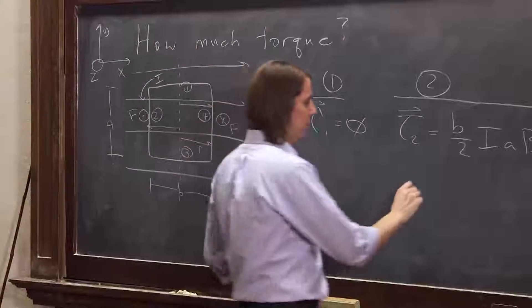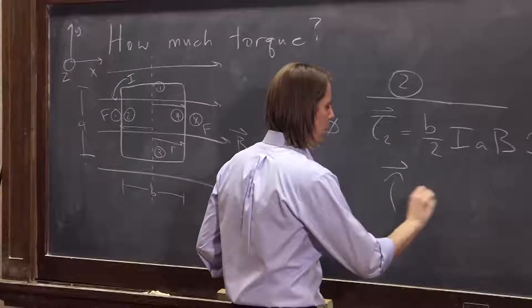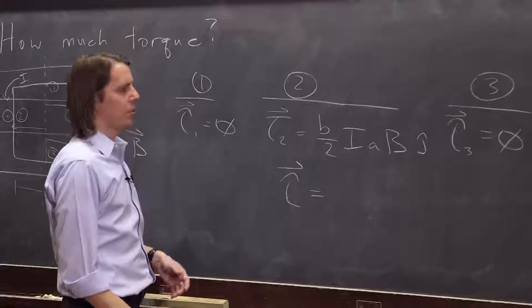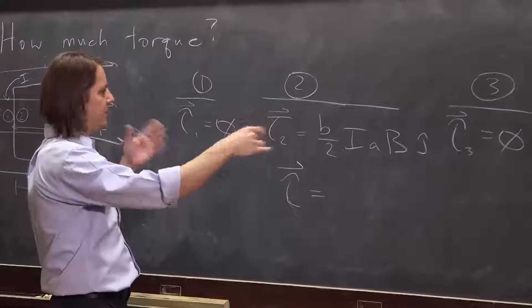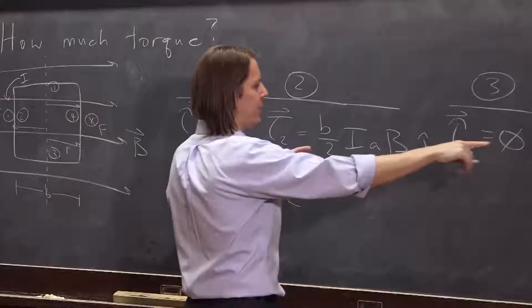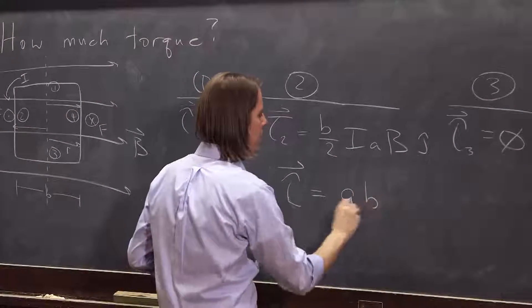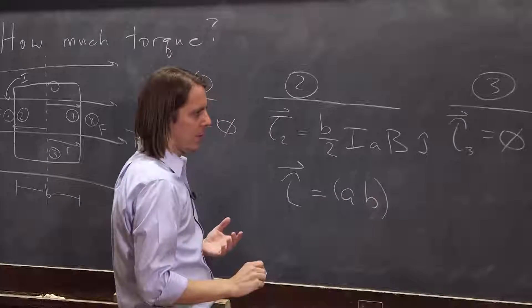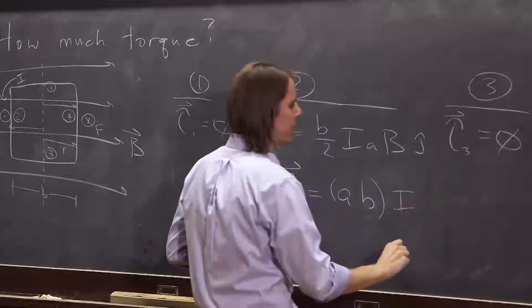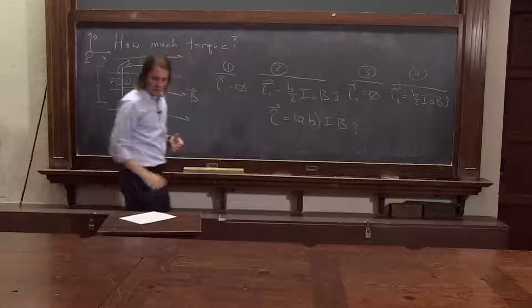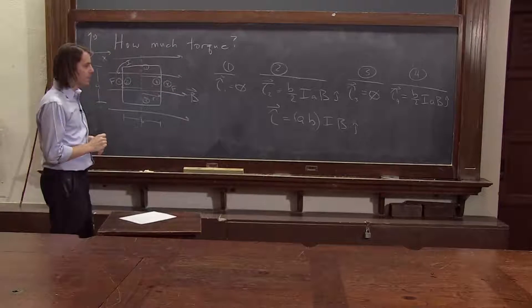So the total torque on the loop, the total torque, is the sum of all these: zero, zero, we have two in the J hat direction, and they're the same, just one half. The one halves go away. So we have A times B, that quantity, times I, the current, times the magnetic field. It's in the J hat direction. That is the total torque.